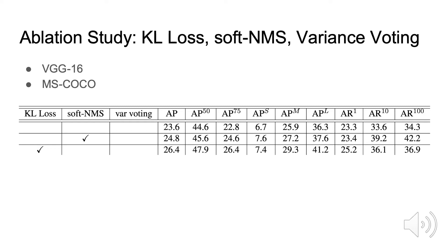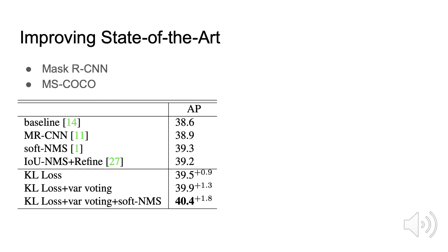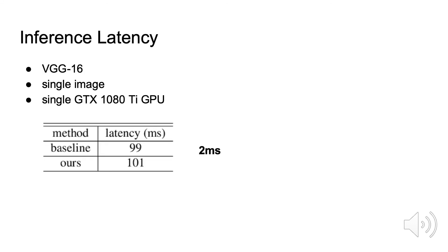Quantitatively, on VGG16 Faster RCNN, simply training with KL loss improves average precision by around 3%. Combining with soft NMS and variance voting, the performance is further improved. Note that variance voting does not conflict with soft NMS, because soft NMS focuses on modifying classification score while variance voting focuses on modifying the location. On state-of-the-art ResNet-50 Mask RCNN, our approach improves around 2% average precision. Most improvements come from AP90 and AP80 — for AP90, the improvement is 6%. Training with KL loss lets you discard the variance prediction at inference and improve performance for free, and with variance voting the performance is further improved with only 2 milliseconds overhead.